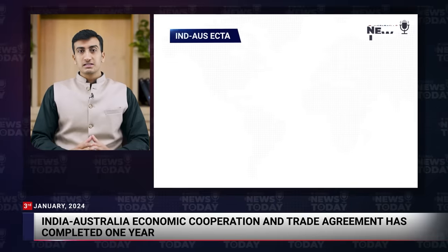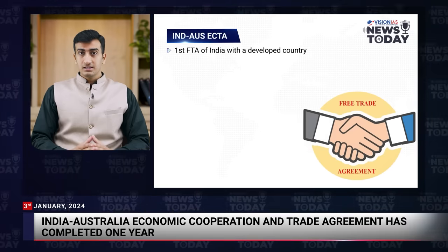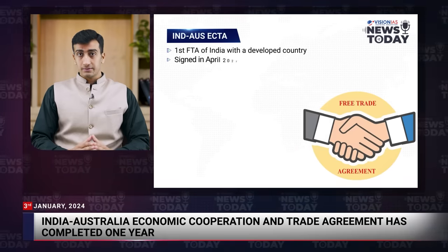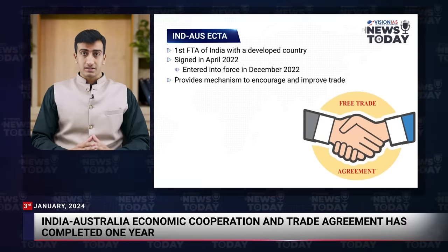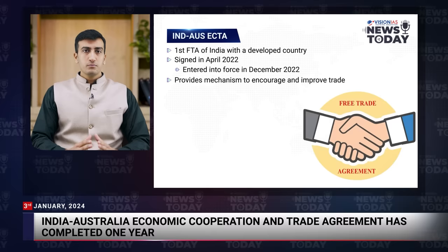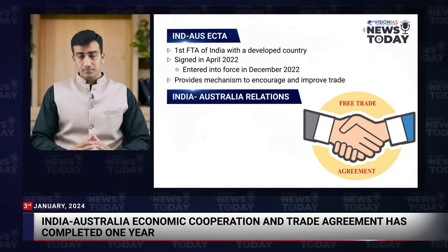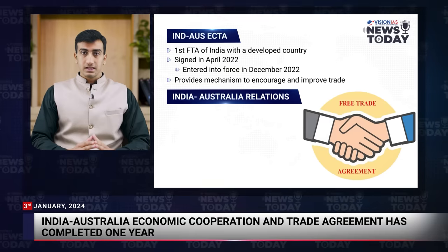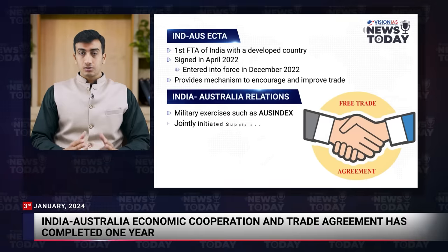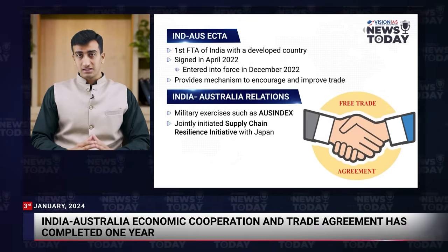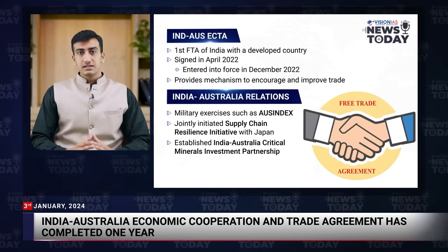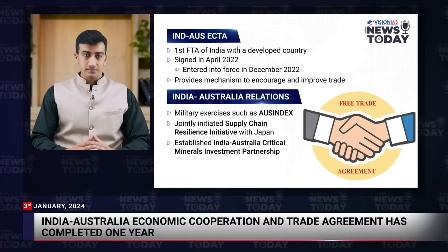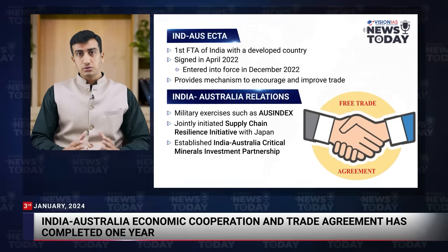Moving ahead: the India-Australia Economic Cooperation and Trade Agreement has completed one year. It was the first free trade agreement of India with a developed country signed after more than a decade, signed in April 2022 and entering into force in December 2022. Both countries share a robust strategic partnership evidenced by regular military exercises such as AusIndex. Collaborating with Japan, they have jointly initiated the Supply Chain Resilience Initiative, aimed at fostering sustainable and inclusive growth in the Indo-Pacific region. India and Australia have also established the India-Australia Critical Minerals Investment Partnership, identifying five target projects including two lithium and three cobalt ventures.